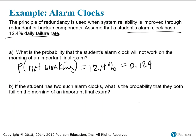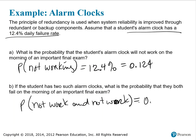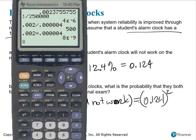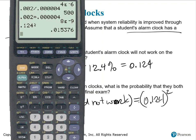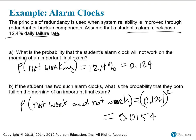If the student has two such alarm clocks, what's the probability that they both fail on the morning of the final exam? Those are two separate alarm clocks, so they're independent of each other. Not work AND not work — both of them failing — is going to be equal to 0.124 × 0.124, which we can square to find the probability that they both will fail. 0.124 squared gives 0.0154, a much smaller probability.